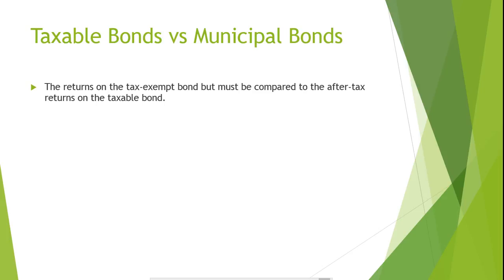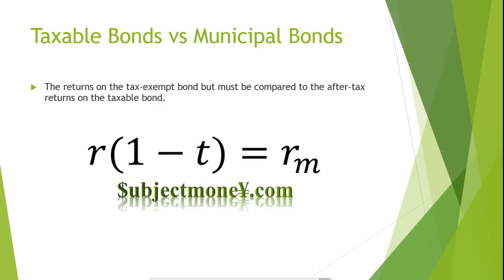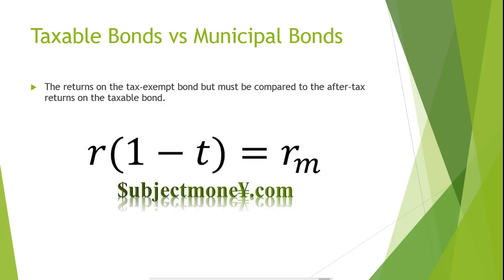To solve for the after-tax rate of return, we use a simple formula. We use R to represent the before-tax rate of return on the taxable bond, and T to represent the combined tax rate for both federal and local taxes. To compute the after-tax returns on a taxable security or bond, we use the formula R times 1 minus T. We then compare the after-tax return to the tax-exempt security, and the investor will be better off holding whichever security provides the higher return.